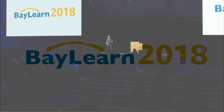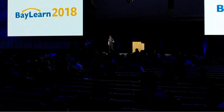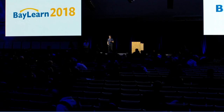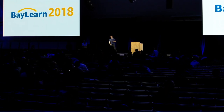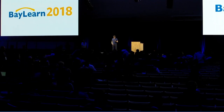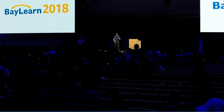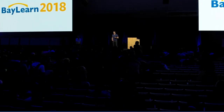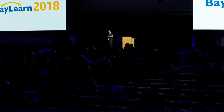Our next keynote speaker is Peter Bartlett. It's an honor to have him today. He's a professor in the Division of Computer Science and the Department of Statistics at UC Berkeley, and also Associate Director of the Simons Institute for the Theory of Computing. He's the co-author of the book Learning in Neural Networks: Theoretical Foundations. He had many students that are now famous in the world of machine learning. The title of his talk today is Some Representation, Optimization, and Generalization Properties of Deep Networks. Let's have a round of applause for Peter Bartlett.